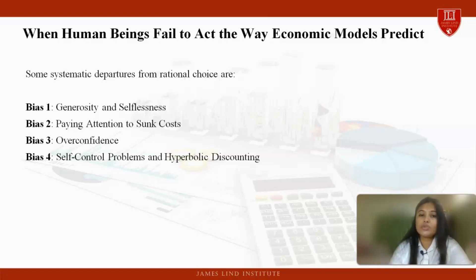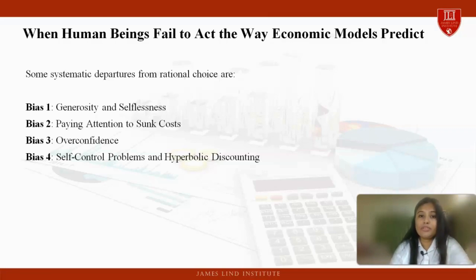Numerous studies have shown that humans tend to overestimate positive attributes about themselves, which is indicative of overconfidence. The fourth bias is self-control problems and hyperbolic discounting, an important bias in behavioral economics where people have a strong preference for the present moment. This is the tendency to place much more importance on the immediate present than the near future when making economic decisions.